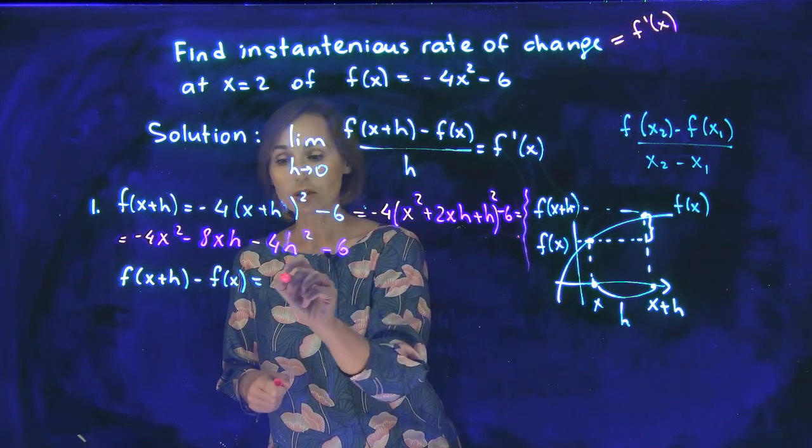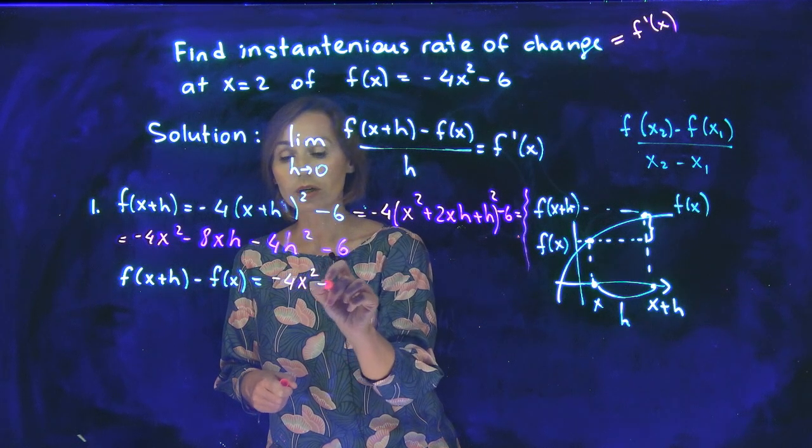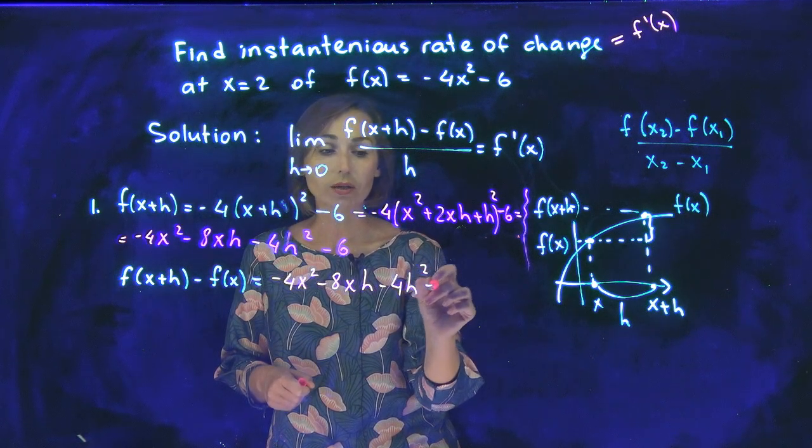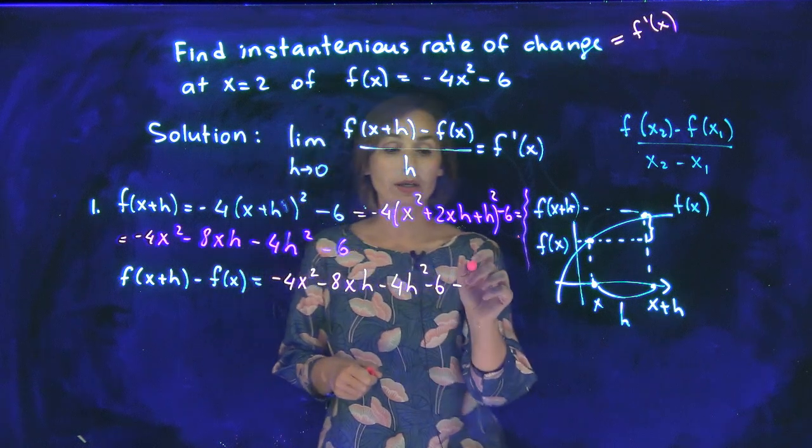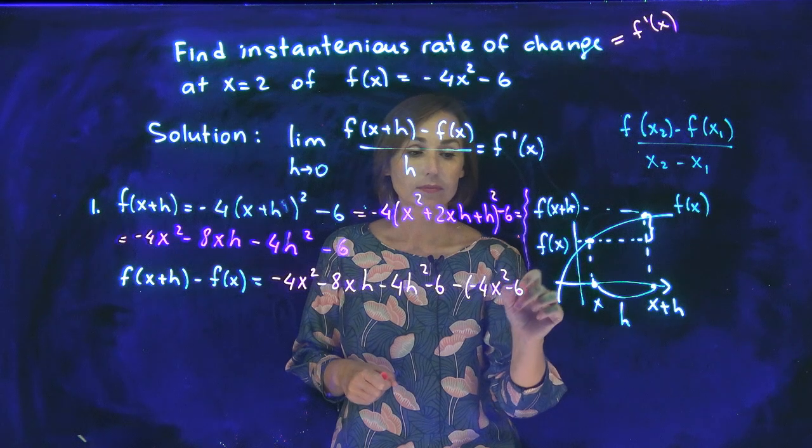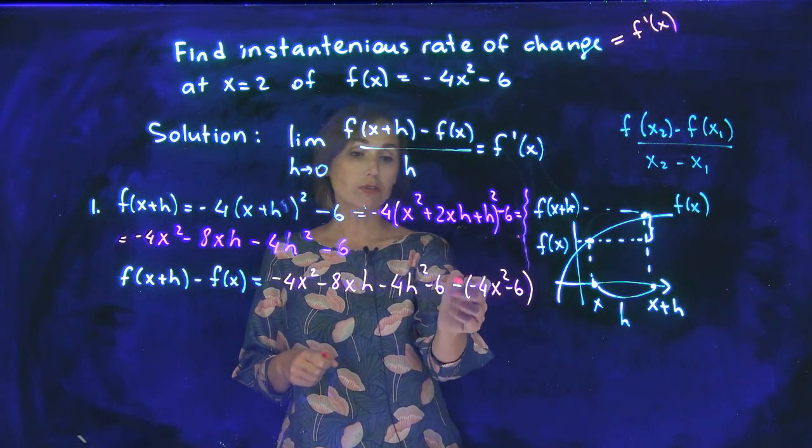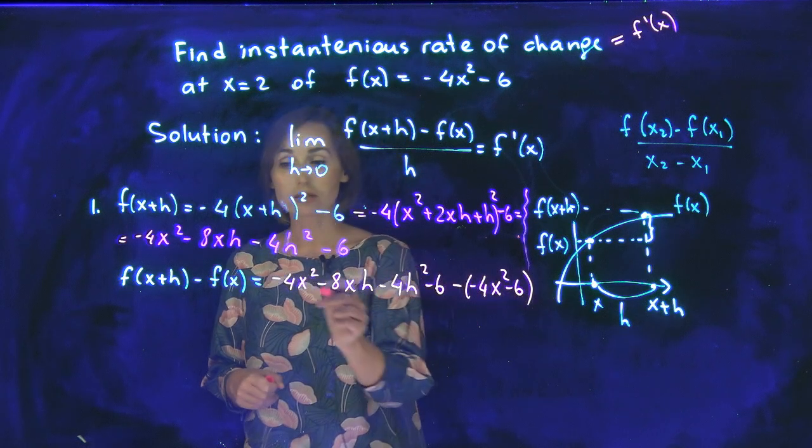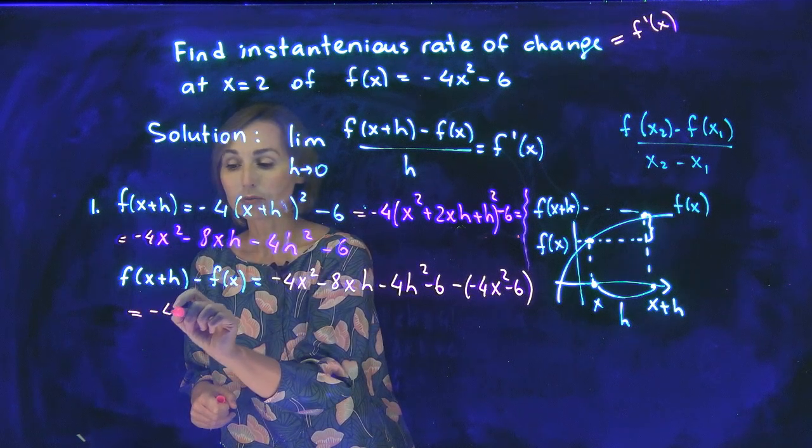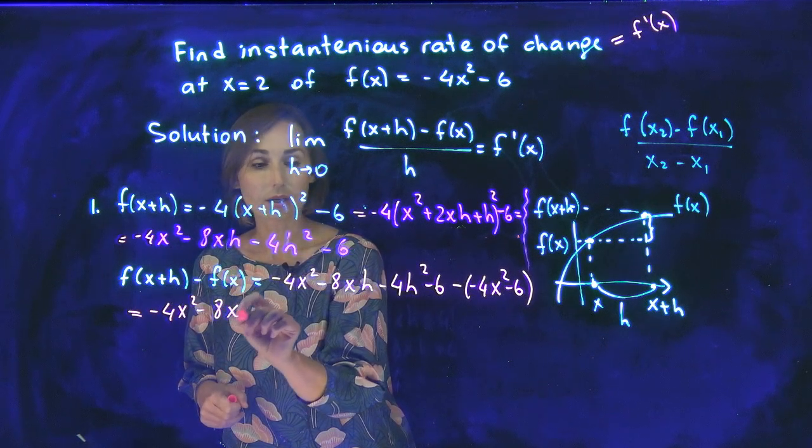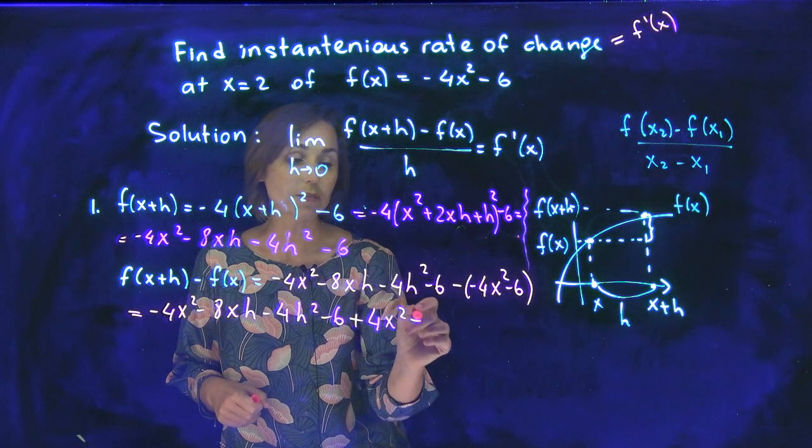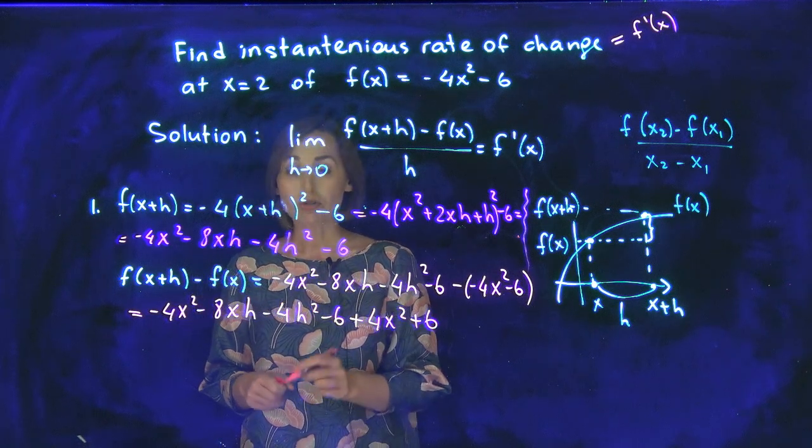So f at x plus h is negative 4x squared minus 8xh minus 4h squared minus 6. Let's subtract function f at x. When you subtract function f at x, you have minus negative plus, minus negative plus. So I have opposites.